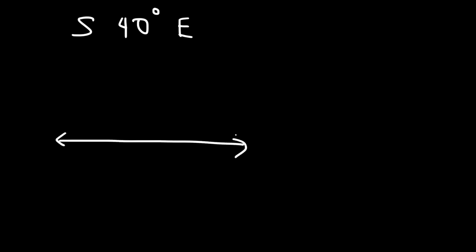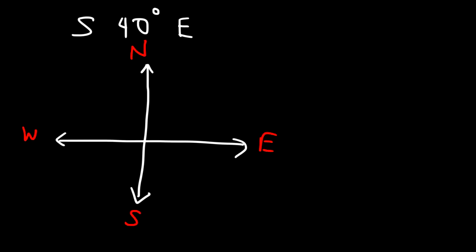Let's try one more example: south, 40 degrees east. Go ahead and try that. So this is north, south, east, west. This time we're starting with the south line, and we're going to go 40 degrees towards the east. And so that is 40 degrees east of south.